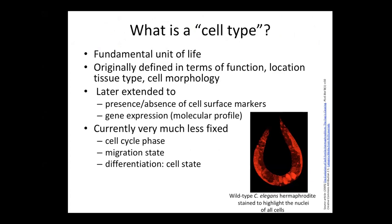A cell type is considered to be the fundamental unit of life. At the beginning, it was defined in terms of function, location, tissue type, or cell morphology. Here we have an example of an image of C. elegans where the nuclei of all cells have been stained. We can see that the organism has different organs, and within each organ, the different cells will do different functions.